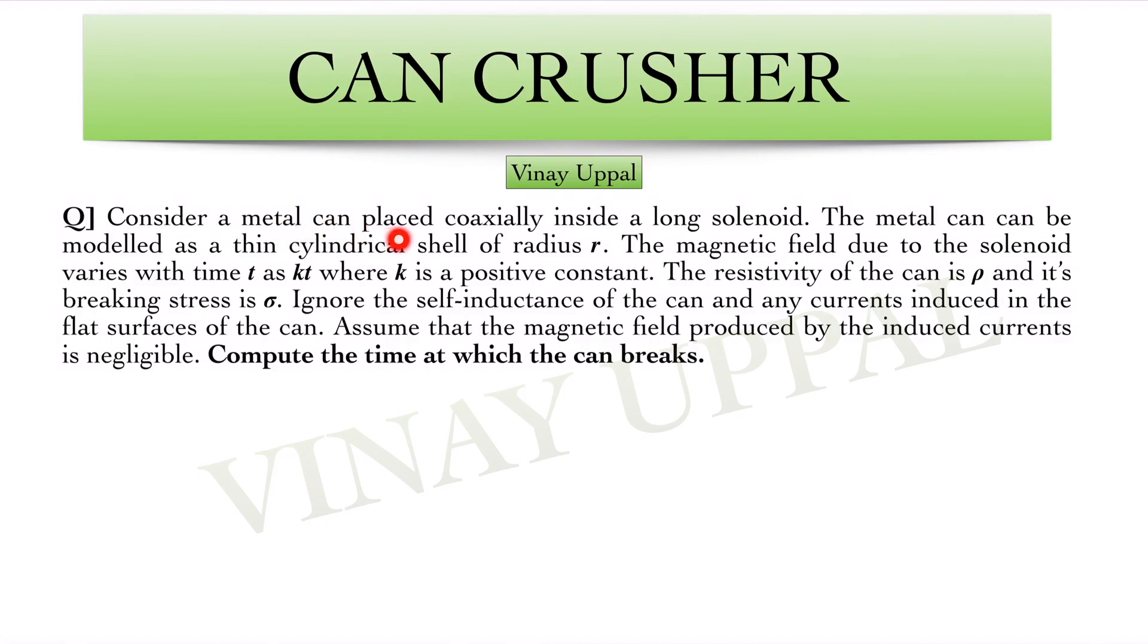Consider the metal can placed coaxially inside a long solenoid. The metal can can be modeled as a thin cylindrical shell of radius r. The magnetic field due to the solenoid varies with time t as kt where k is a positive constant. So because the magnetic field of the solenoid is varying with time, there will be some induced currents generated inside the metal can.